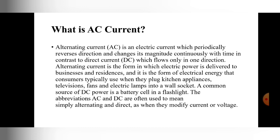Alternating current is the form in which electrical power is delivered to businesses and residences. It is the form of electrical energy that consumers typically use when they plug kitchen appliances, televisions, fans, and electrical lamps into a wall socket. That means alternating current is present in home appliances.